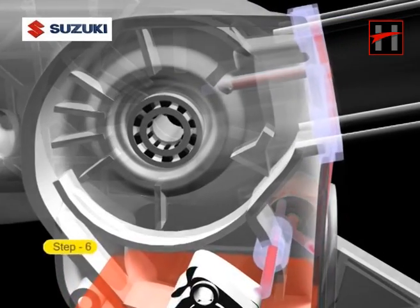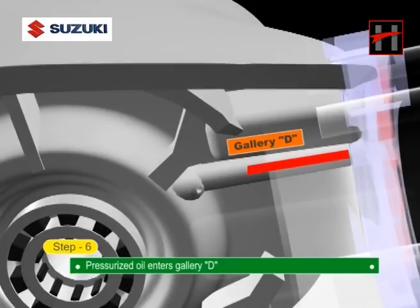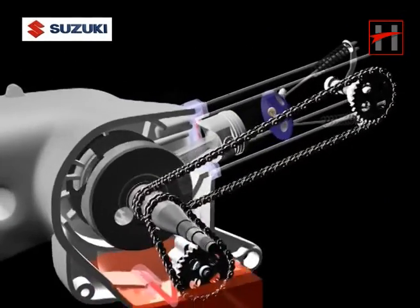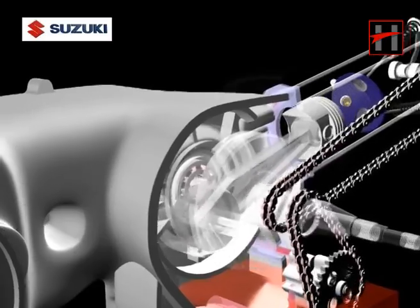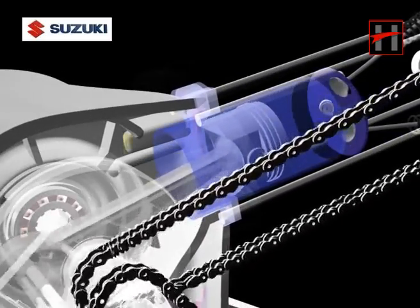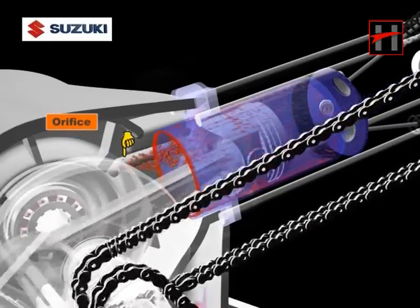Step 6: The pressurized oil enters gallery D and is sprayed out from an orifice for lubrication of piston and the cylinder wall.